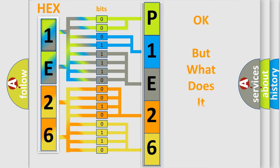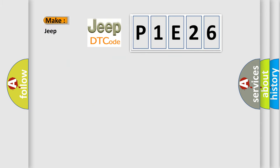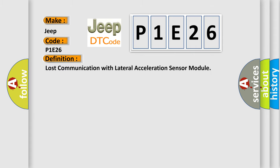The number itself does not make sense to us if we cannot assign information about what it actually expresses. So, what does the diagnostic trouble code P1E26 interpret specifically for Jeep car manufacturers? The basic definition is Lost communication with lateral acceleration sensor module.